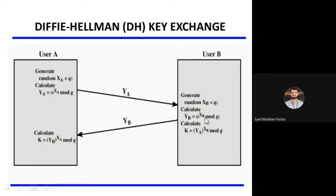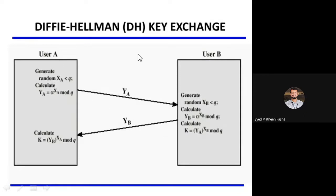Bob finds YA and sends YB to user A. Once user A gets YB from user B, he calculates the shared key K = YB to the power of XA mod Q. Similarly, Bob calculates YA to the power of XB mod Q. The key should be the same for both users — user A and user B. This is how the key exchange happens in Diffie-Hellman.